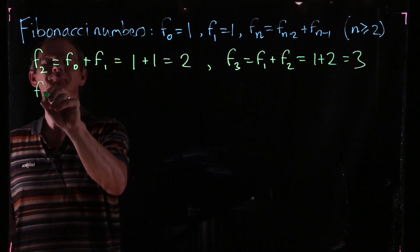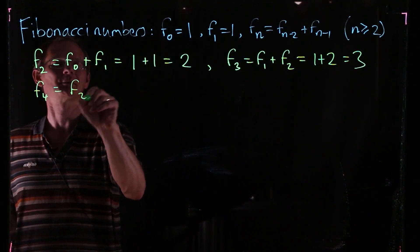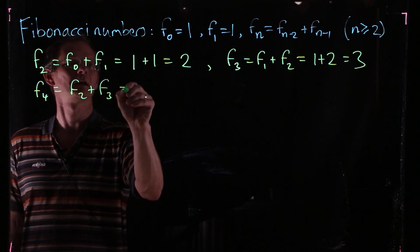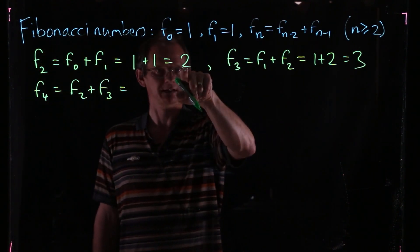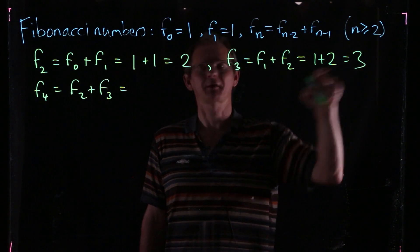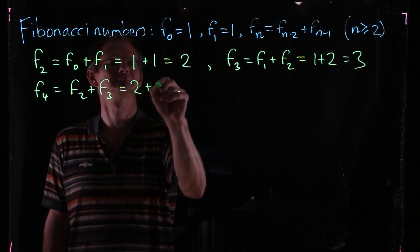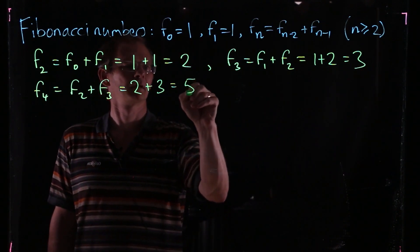And your F4 is F2 plus F3. So here's F2 which is 2, and here's F3 which is 3, so we get 5.